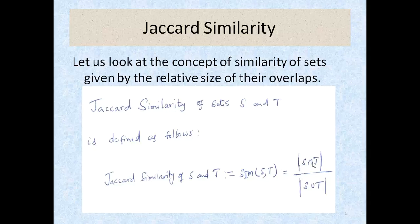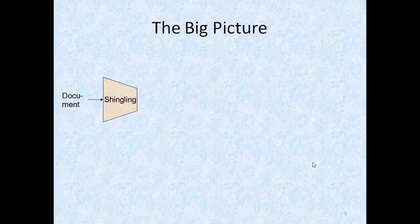When talking about document similarities between many pairs of documents, you set a threshold — say 0.4 — and you say if the Jaccard similarity is greater than 0.4, you call the documents similar. That's the idea, and we need to run this on many pairs of documents — that's where this algorithm comes in.